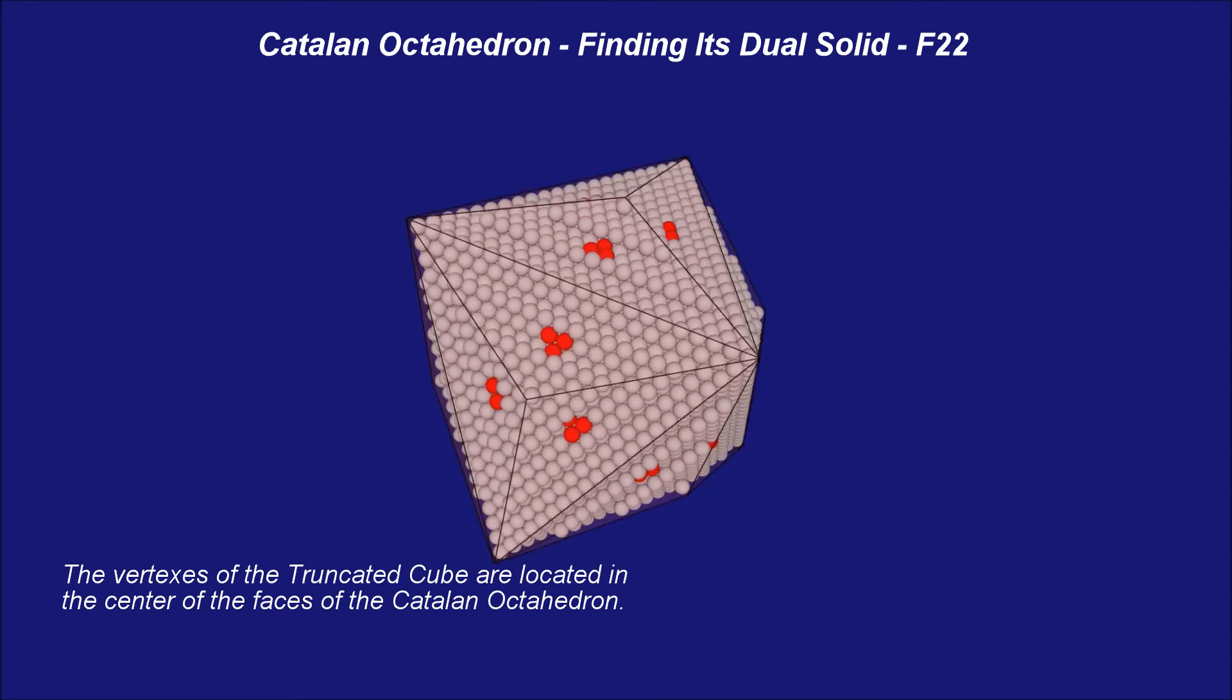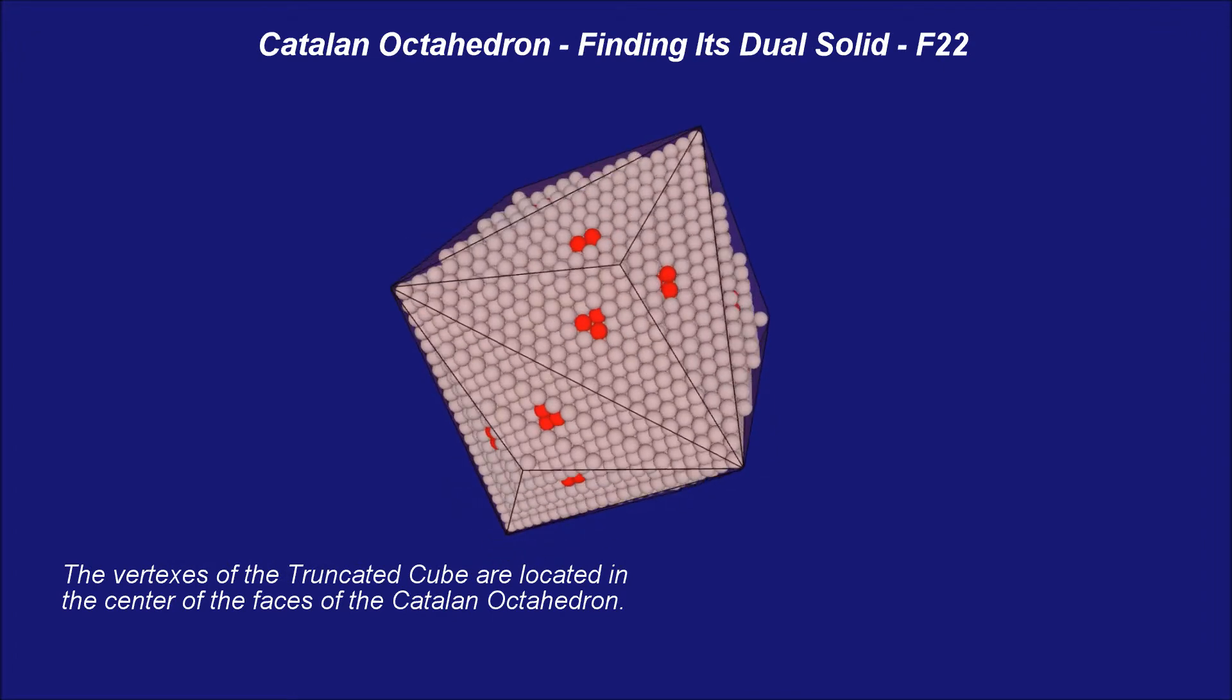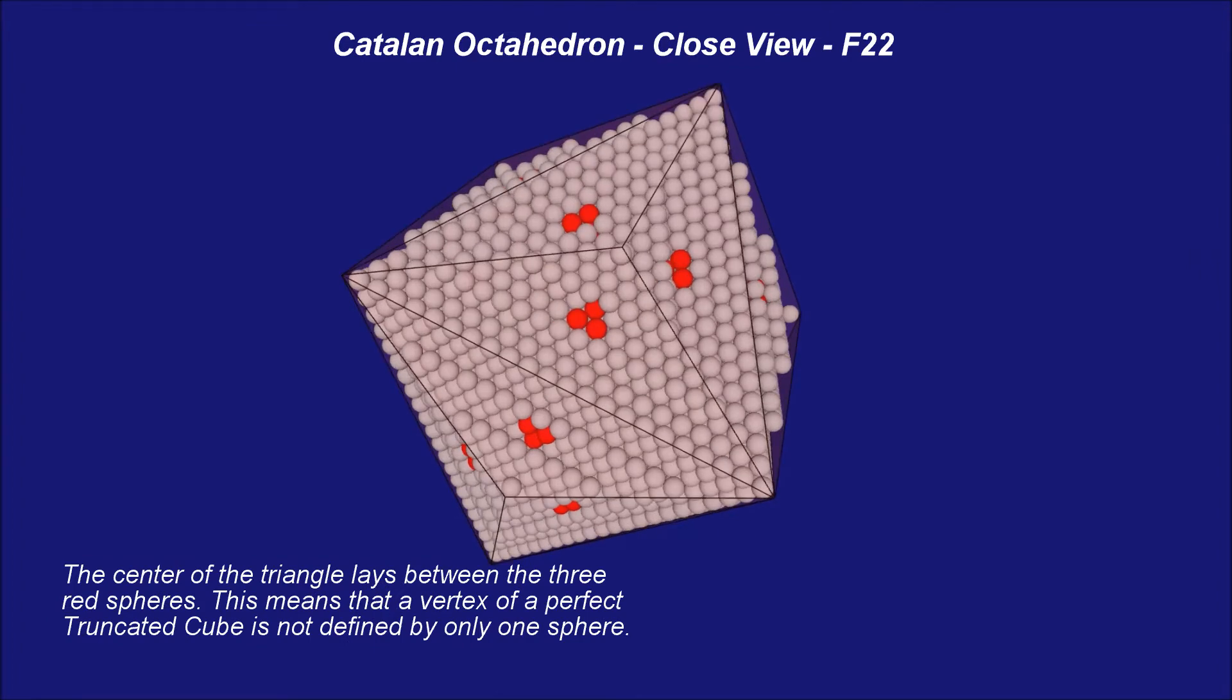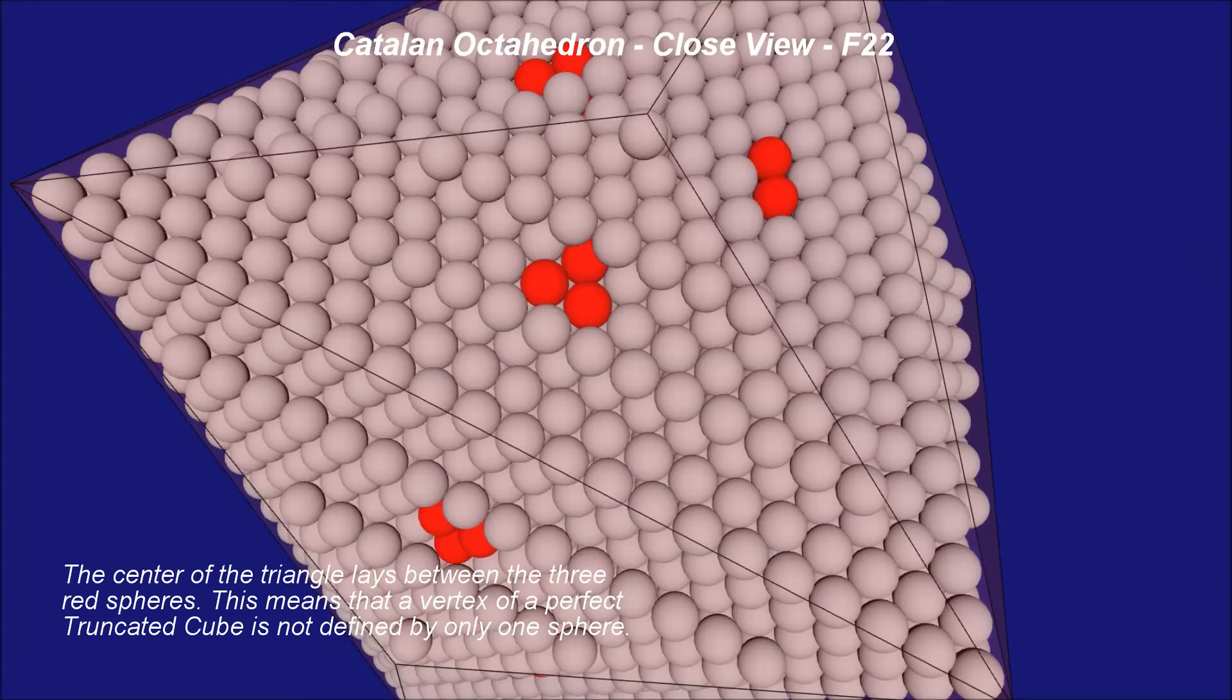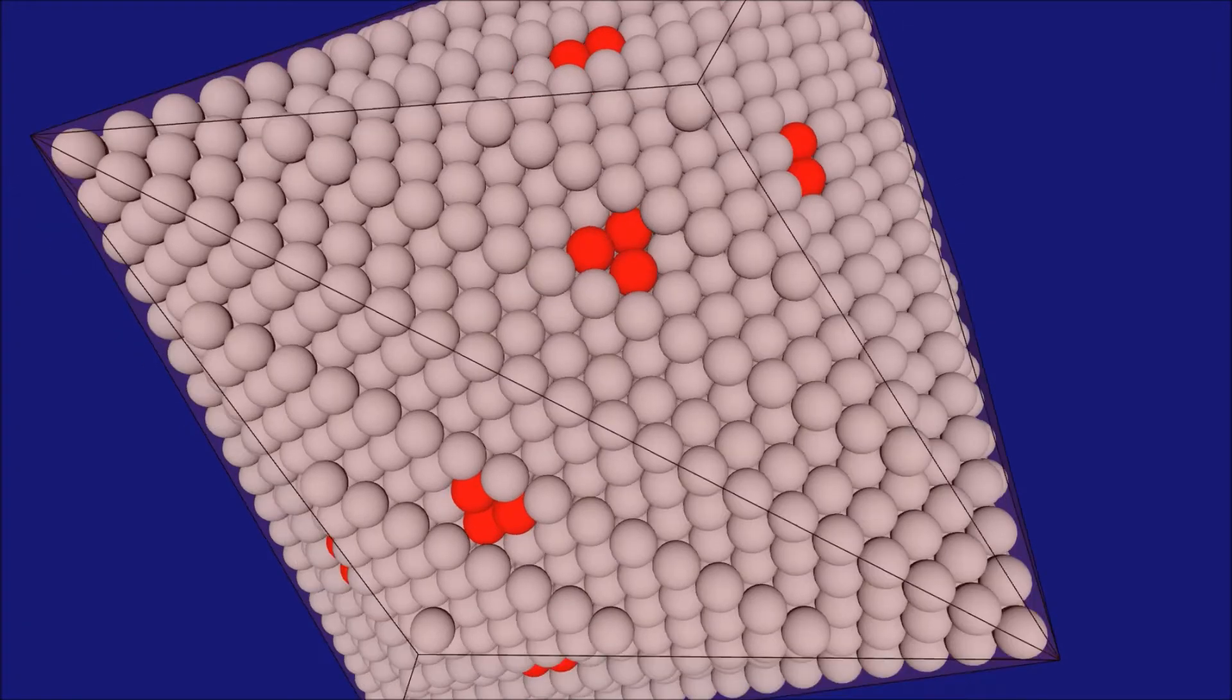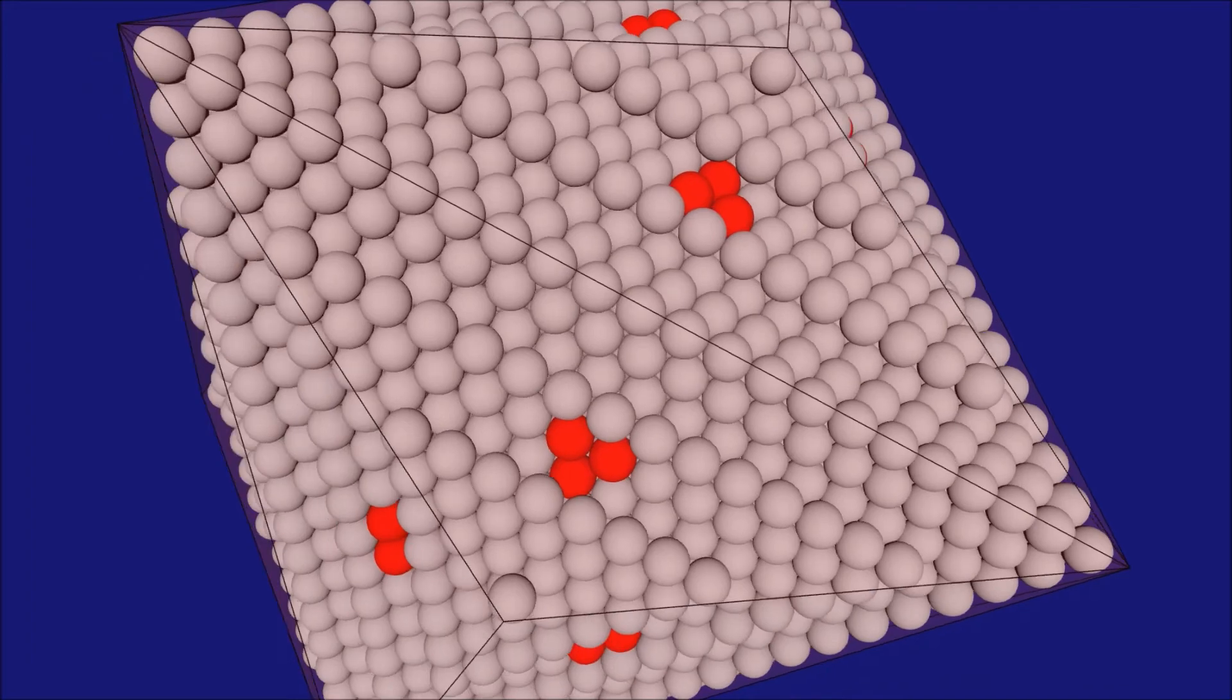Let us go back to the Catalan octahedron of size 22 and use it to reveal its corresponding dual solid, namely the truncated cube. The vertexes of the truncated cube are located in the center of the faces of the Catalan octahedron.